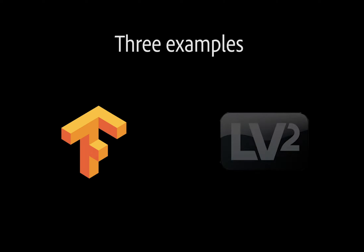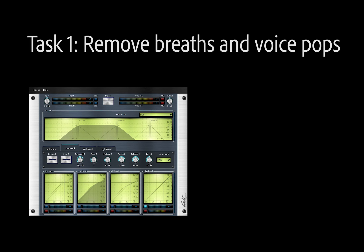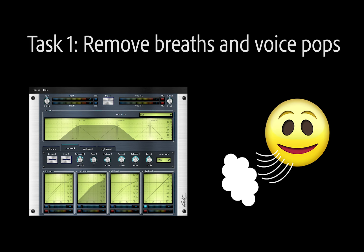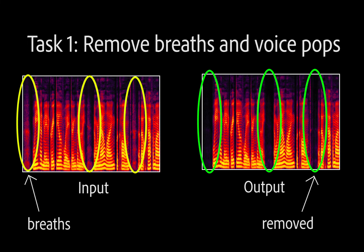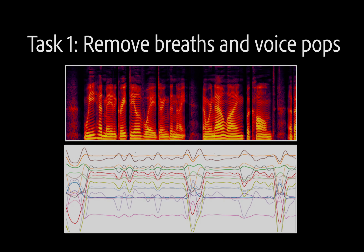To demonstrate the power of our approach, we show three separate audio production applications using a deep encoder to control Linux audio effects or LV2 plug-ins. For our first task, we train a network to use a multiband gate to automatically remove unwanted breaths and pop sounds from a voice recording. We can listen to the breathy input to our voice model, and then the automatically cleaned up output. We can also view the multiband gate parameter automation over time to see how the deep encoder used the effect to achieve the optimal result.